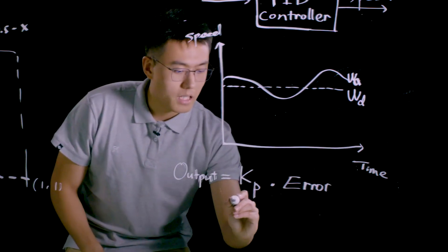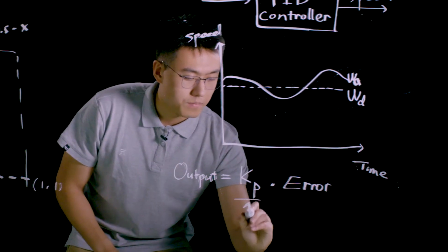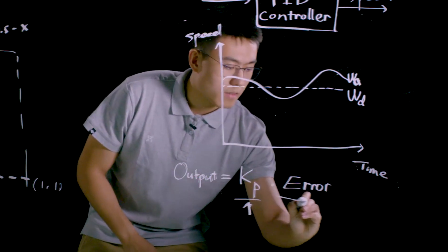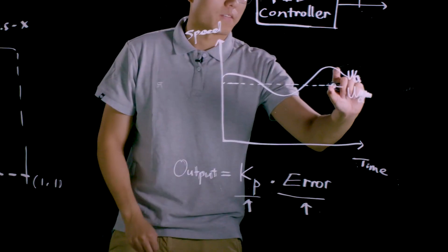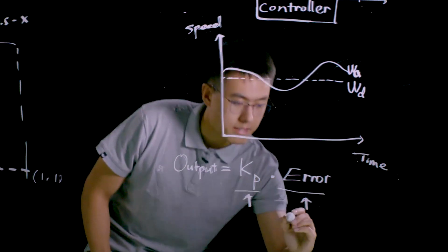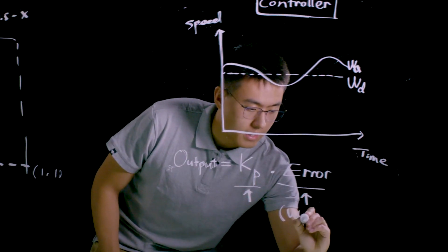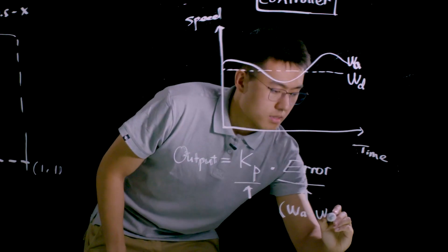Here Kp is the scale coefficient, and the error is the difference between the actual value and the target value. So in this case, it's omega A minus omega D.